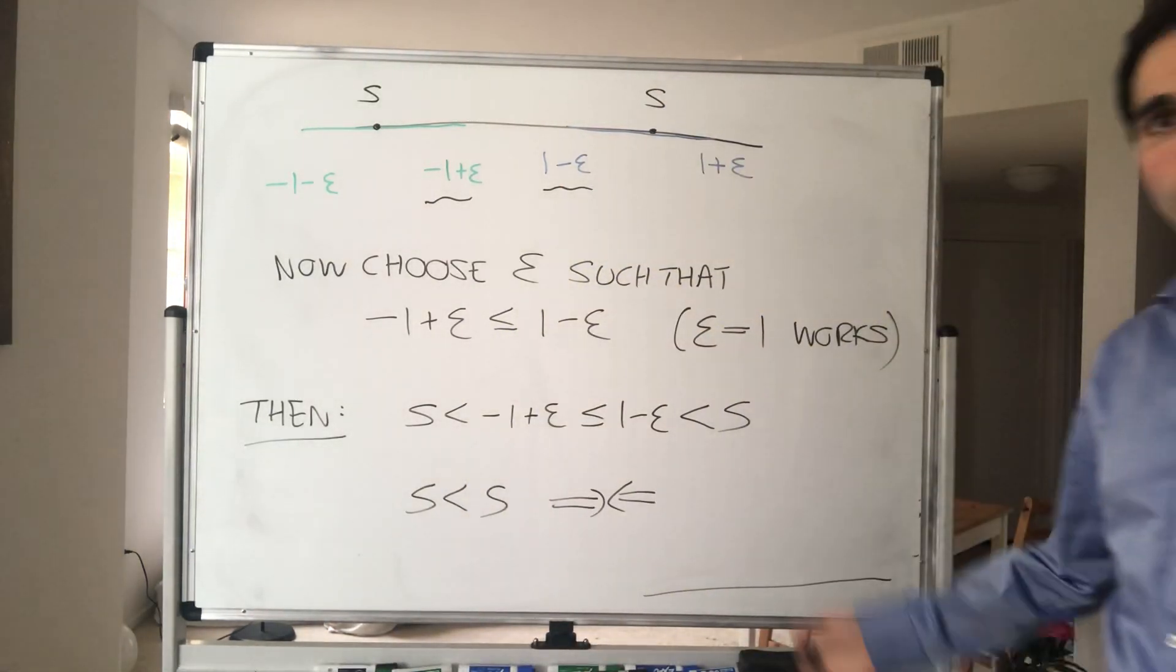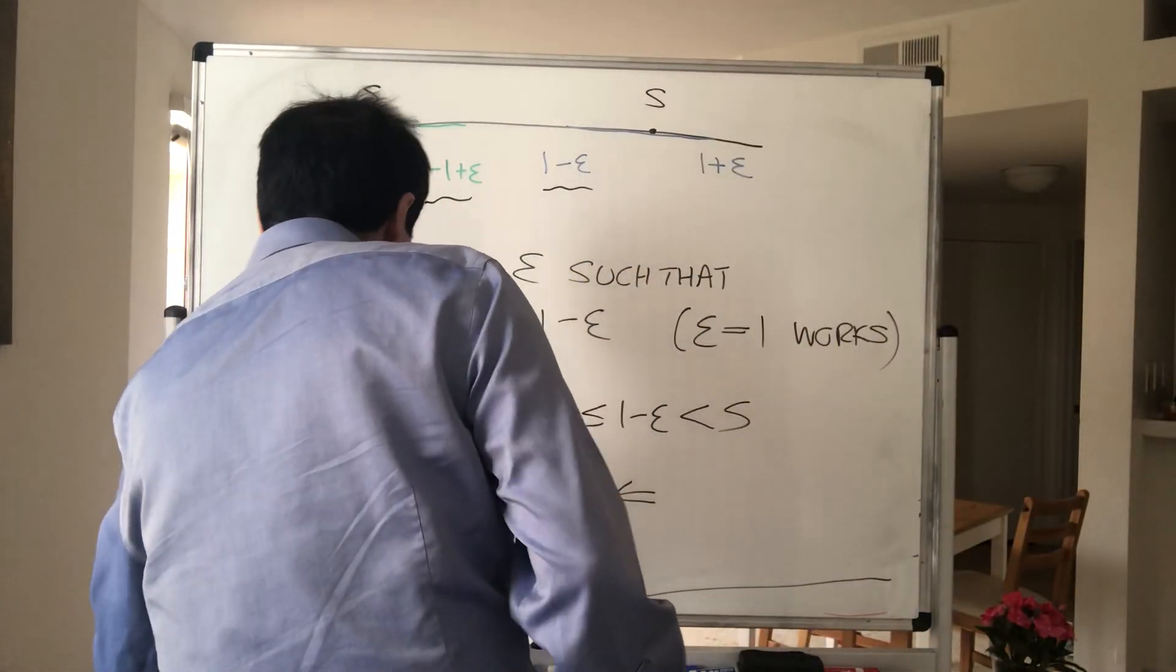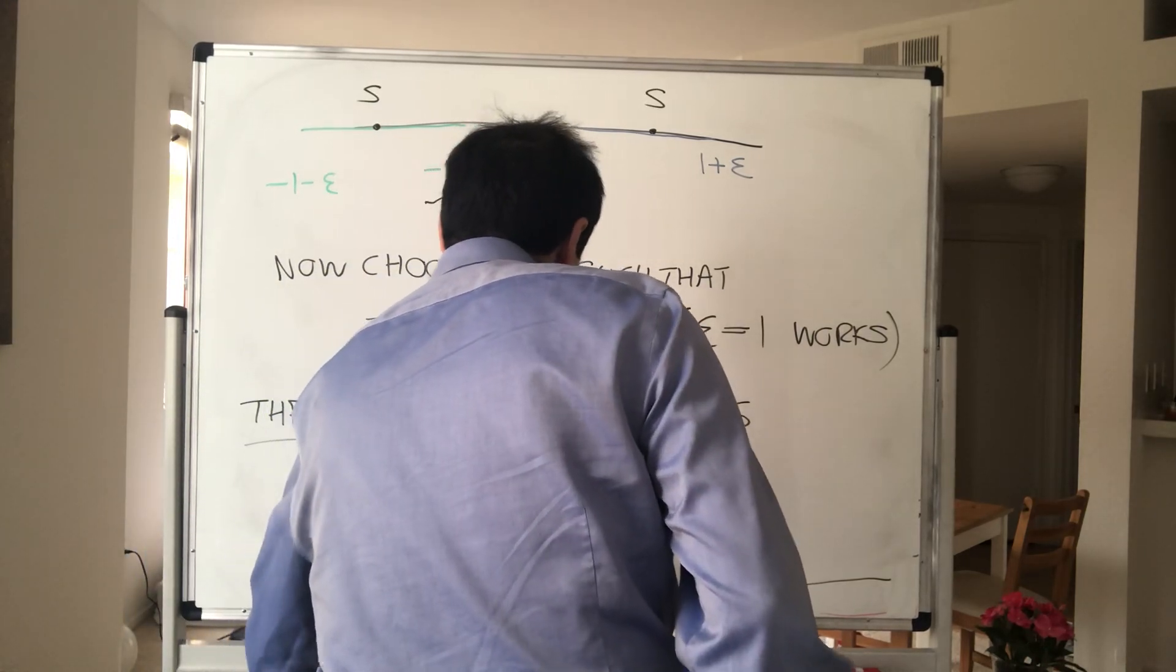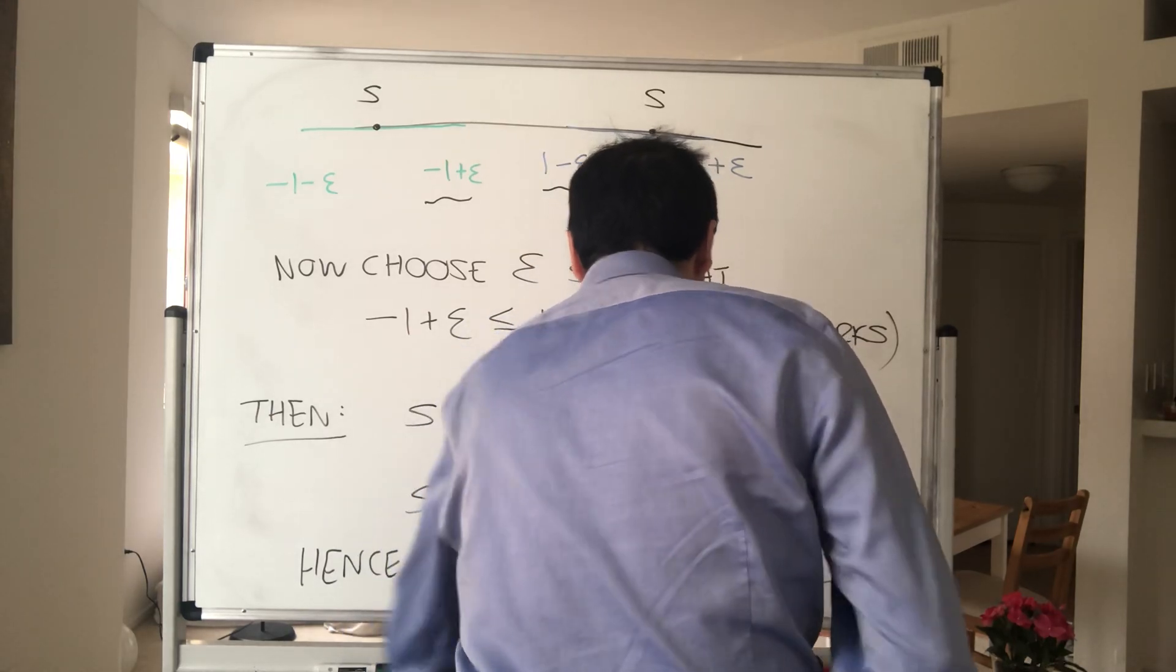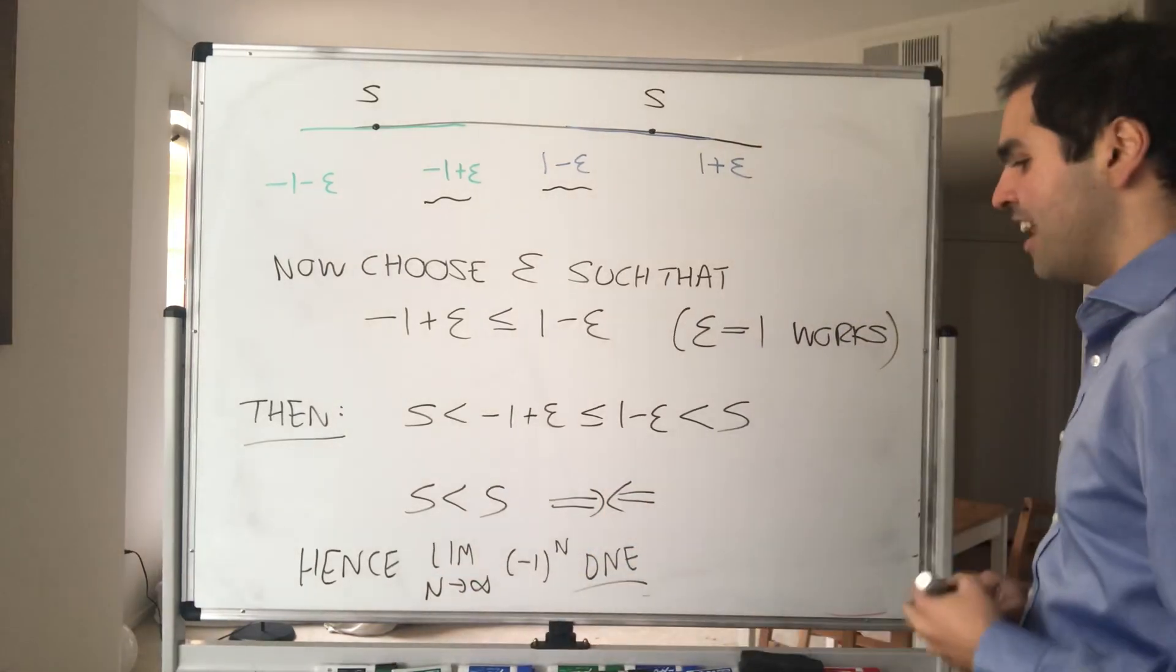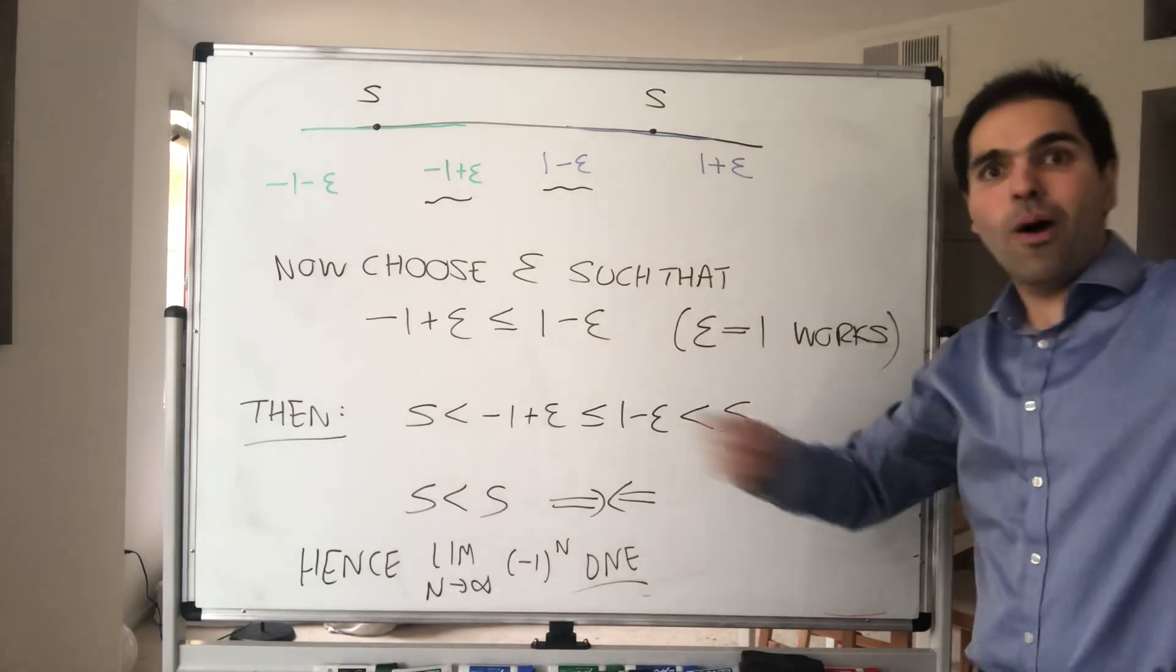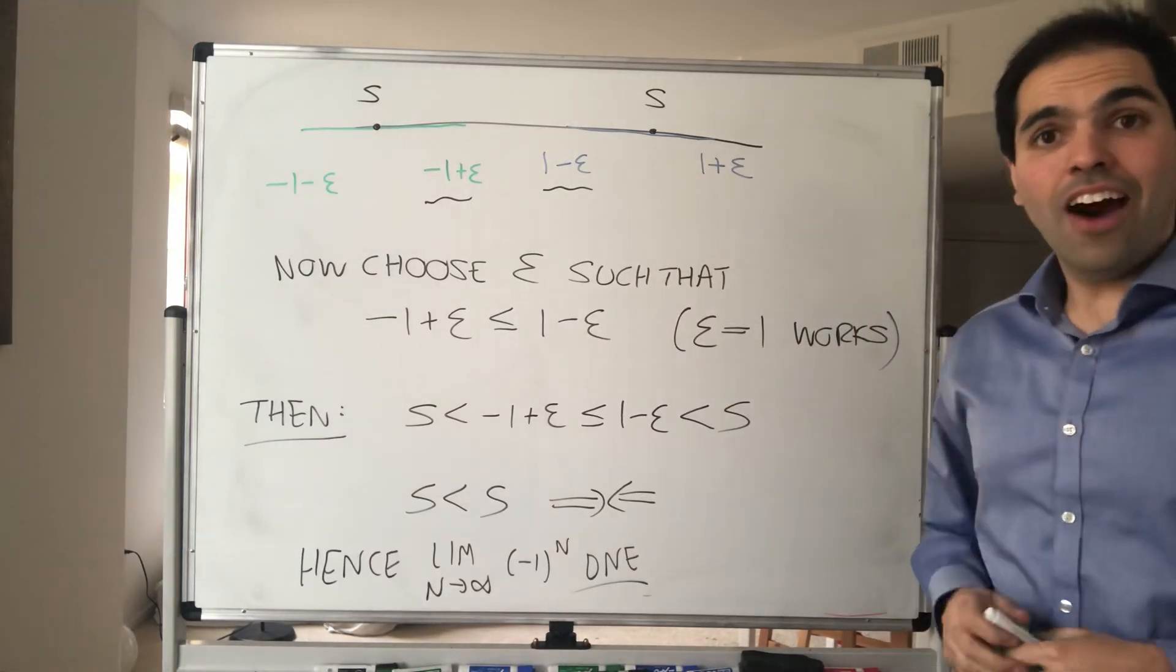Contradiction with what? With the limit existing, and therefore the limit doesn't exist. It doesn't exist. And here we chose n even and n odd, but essentially you just choose n which gives us all the possible limits there are, like here, -1 and 1. All right, thank you very much.